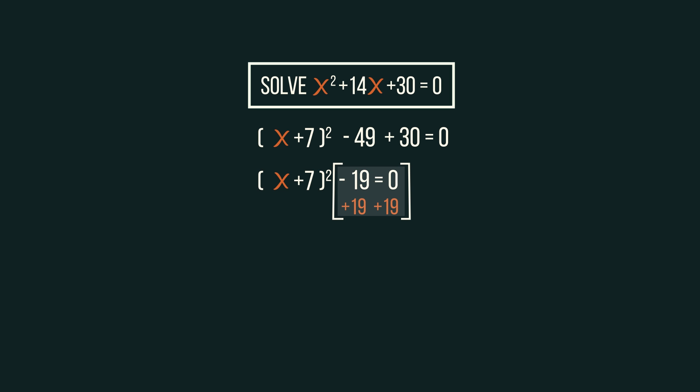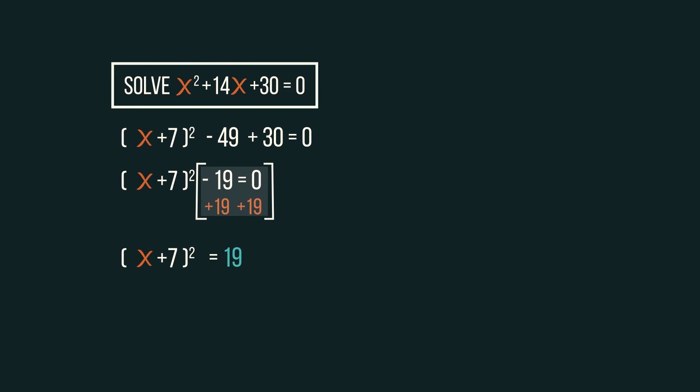Rearrange by adding 19 to both sides and we get x plus 7 squared equals 19.